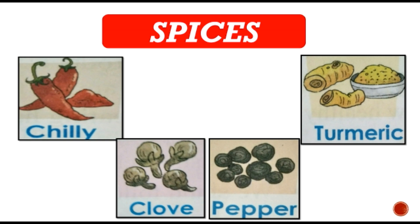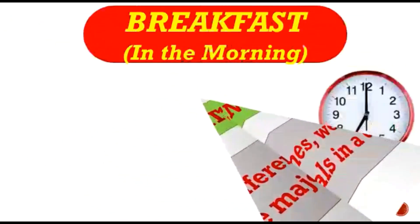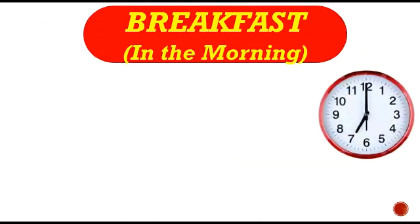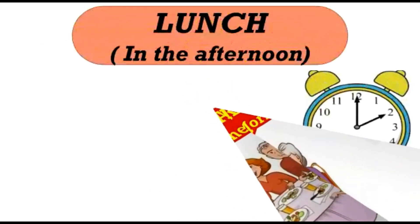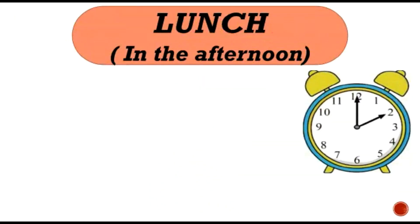Now we will discuss meals eaten in a day. At different times we eat three major meals in a day. First, we start our day by taking our first meal, and that is breakfast in the morning. We should never skip our breakfast — it gives us energy to do work for the whole day. We take our second meal in the afternoon, and that is lunch.